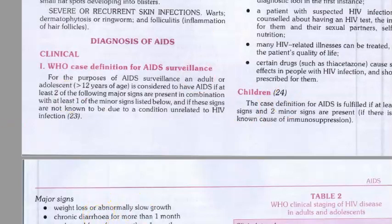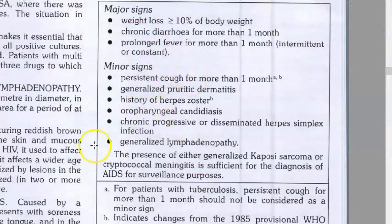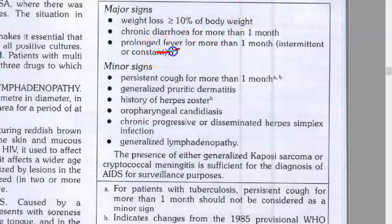If they ask you the case definition for AIDS, look at this WHO case definition. Basically, it is how you know a patient falls under this diagnosis. There are some minor signs and major signs. Major signs are weight loss greater than or equal to 10 percent of body weight, chronic diarrhea, and prolonged fever for more than one month.